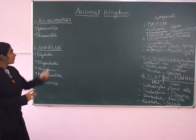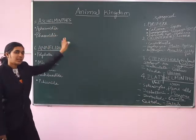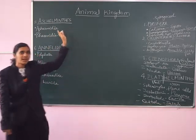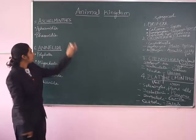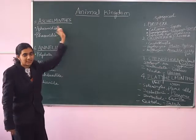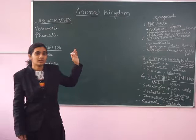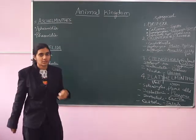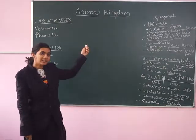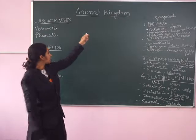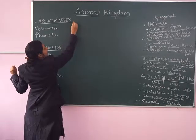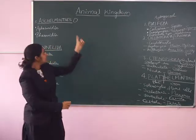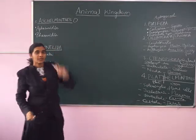What is Aschelminthes? Helminthes, as I have already mentioned, means worm, and 'asc' means round. So this phyla contains the round worms. They are called round worms because they look round when a cross section is taken.